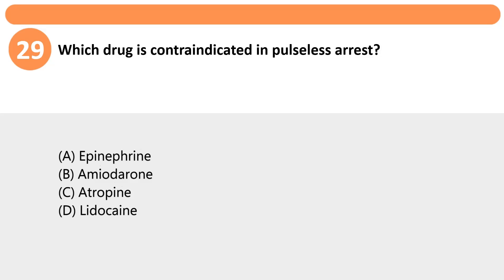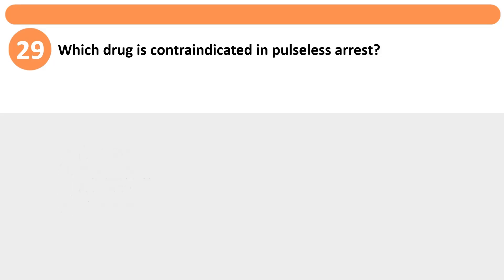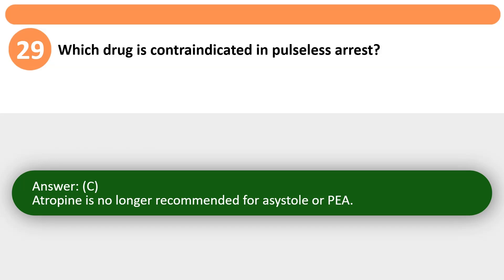Which drug is contraindicated in pulseless arrest? Answer: C. Atropine is no longer recommended for asystole or PEA.